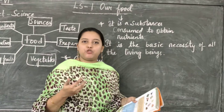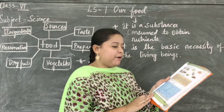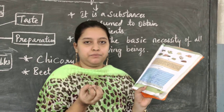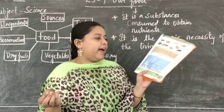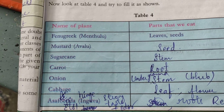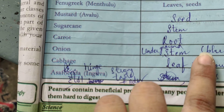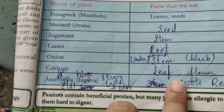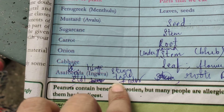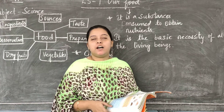These condiments and dry fruits are very expensive and grown only in particular places. Now coming to Table Number Four — you need to name the plant and the part we eat. Fenugreek (methi): we eat the stem, leaves, and seeds. Mustard (avalu): stem. Sugarcane: stem. Carrot: root. Onion: underground stem (bulb). Cabbage: leaf. Asafoetida (hing): resin from roots.